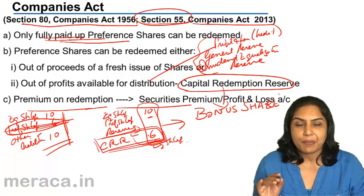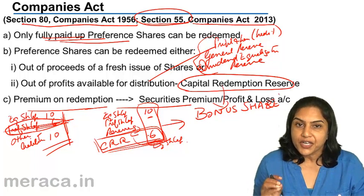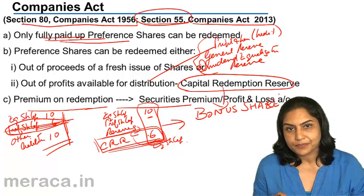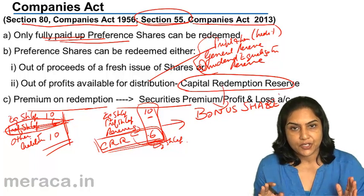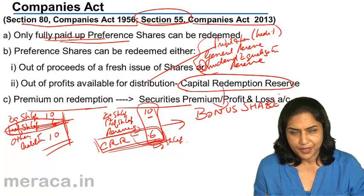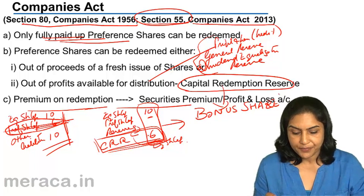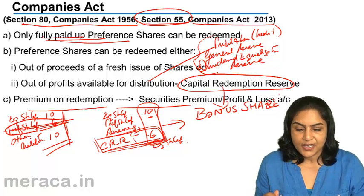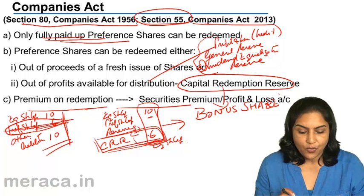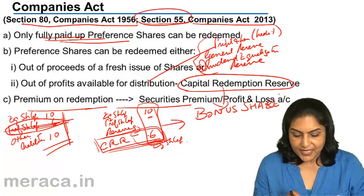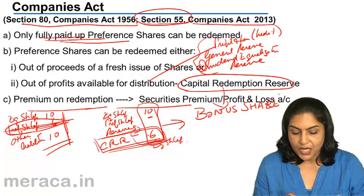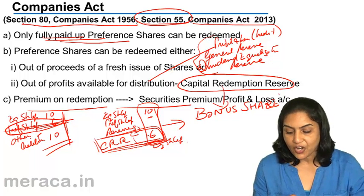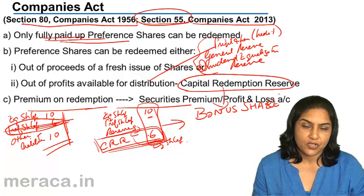Basically, the Companies Act says that when we redeem preference share capital, the capital structure should not be disturbed. We will discuss the rationale behind this shortly. One more provision: the premium on redemption, if any, should be charged to the securities premium account or the profit and loss account.